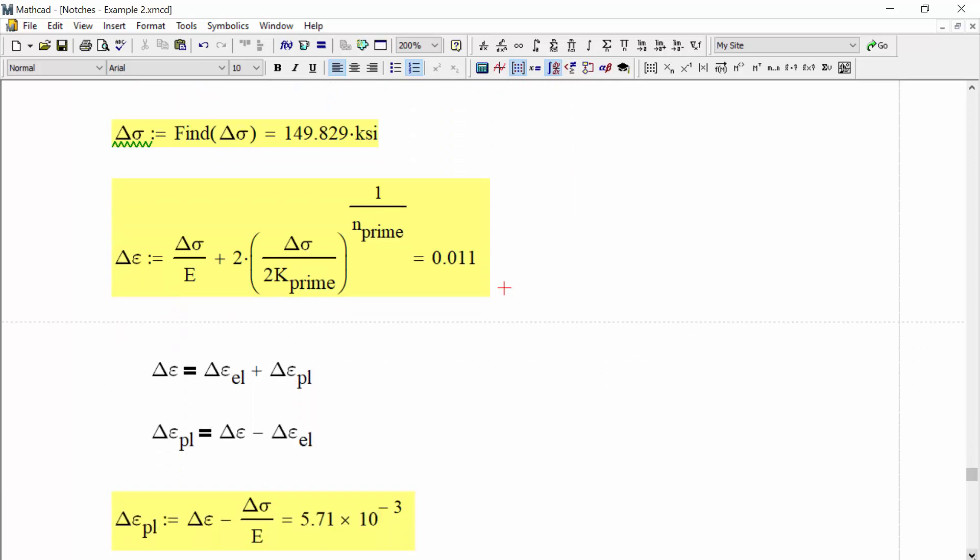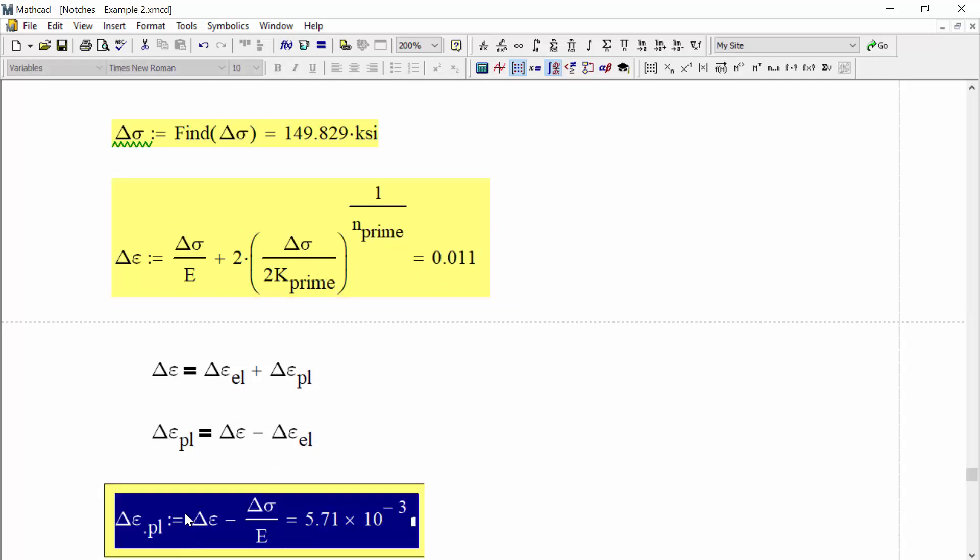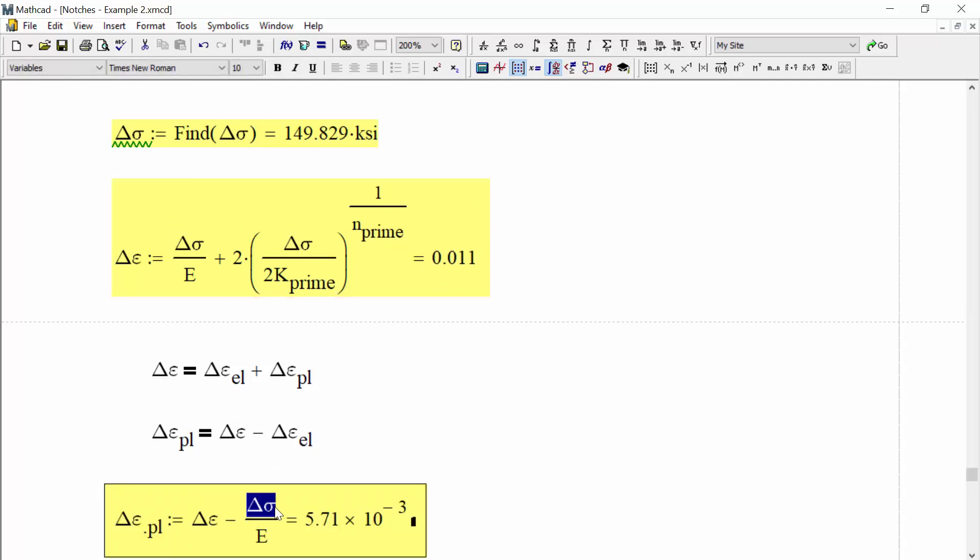So now we've got, we almost got everything that we need. We wanted to get the stress range. We wanted to get the strain range, but we also wanted the plastic strain range. So let's put that together. Well, total strain range is equal to an elastic strain range plus a plastic. We can rearrange that to say that the plastic strain range is equal to total minus the elastic range. We've already got the total. That's what we calculated with Ramberg-Osgood. We just need to add the elastic portion, which would be the stress range divided by modulus. We put that together and our plastic strain range is 5.71 E to the negative 3.